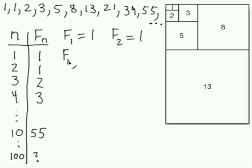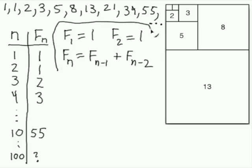But in general, we could say that the Nth number has to be equal to the 1 before it, F sub N minus 1, plus F sub N minus 2. So these three equations together will let us figure out any of the Fibonacci numbers at all.